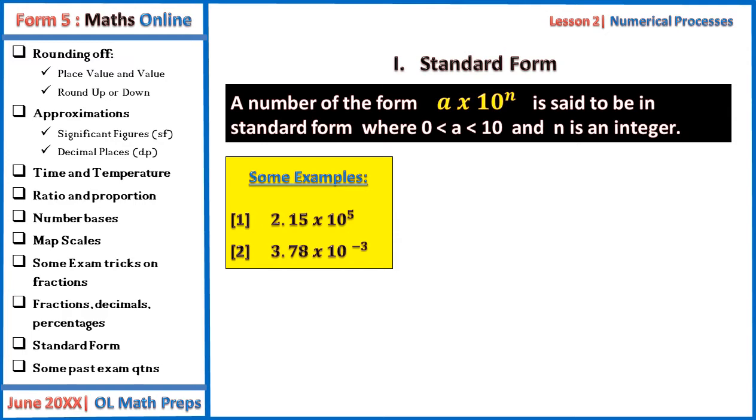These are some examples. You have 2.15 times 10 to the power 5, 3.78 times 10 to the power minus 3. These numbers are in standard form.